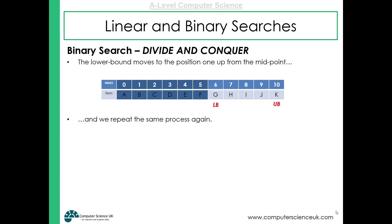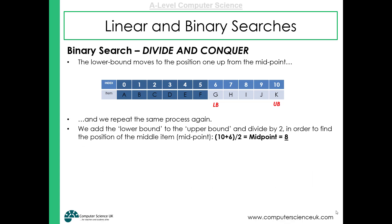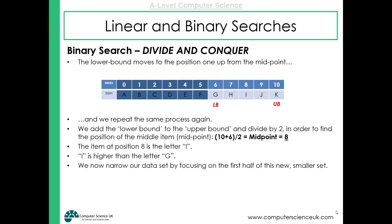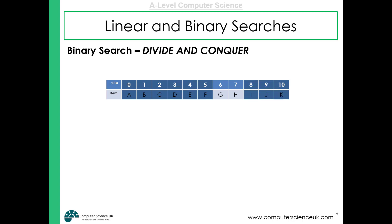We repeat the process and find the new midpoint. The lower bound is 6 and the upper bound is 10. 10 plus 6 is 16, and half of 16 is 8 — so the new midpoint is 8. The item at position 8 is the letter I. Since I is higher than G in the alphabet, we can ignore the top half of this new subarray, leaving an array of two items. The upper bound is now recalculated to one less than the midpoint: 8 minus 1 gives a new upper bound of 7.